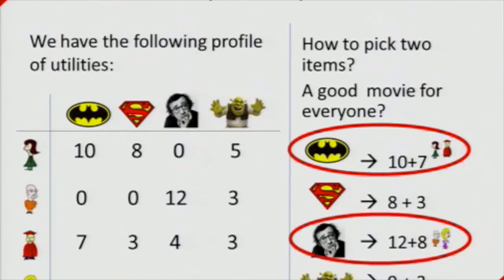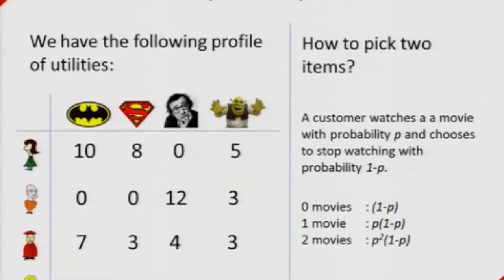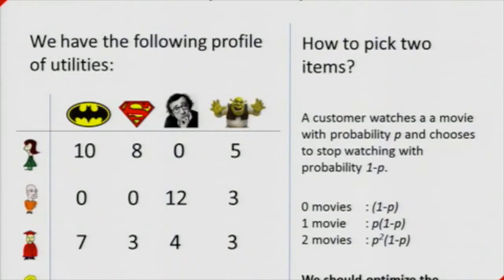What if you have a better understanding of your customers? It's a 19-hour flight — probably more than one movie. With probability p a passenger chooses to watch a movie, and with probability 1-p they stop and fall asleep. The probability of watching no movies is 1-p; one movie gets p times 1-p; two movies get p-squared times 1-p. Your model would be expected utility of each passenger — you want to pick movies that maximize expected utility. Rather than studying each model separately, we should find a more general framework.